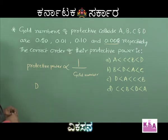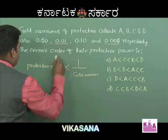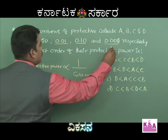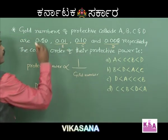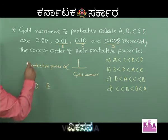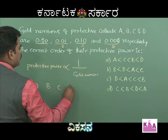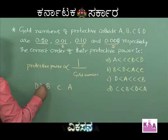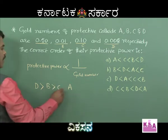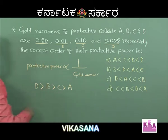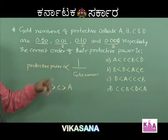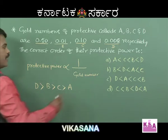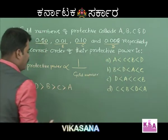The next lowest gold number is B (0.01), followed by C (0.10), and then A (0.50). So the order of protective power is: D > B > C > A. Looking at the options, option A states exactly this order.